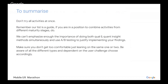So that's it. Just to summarize: don't try all of these activities at once. This is purely just a guide. If you're in a position to combine activities from different maturity stages, do. We can't emphasize enough the importance of both qualitative and quantitative insight activities simultaneously. Always use A/B testing to justify implementing your findings. Make sure you don't get too comfortable leaning on the same one or two insight methods — be aware of all the different types, and dependent on the user challenge, choose the correct one accordingly.